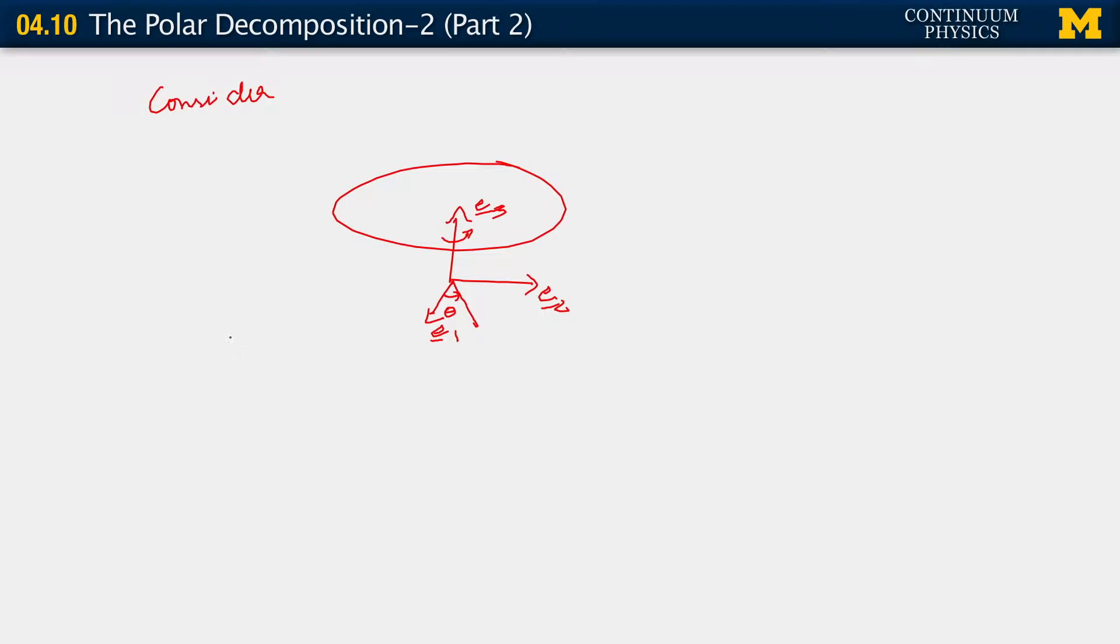You can see that Q as a function of time can essentially be written using this basis as cosine theta function of time, sine theta function of time, 0, 0, minus sine theta function of time, cosine theta function of time, 0, 0, 0, 1.